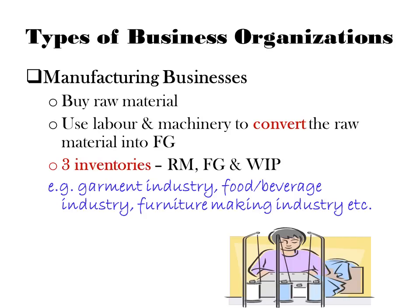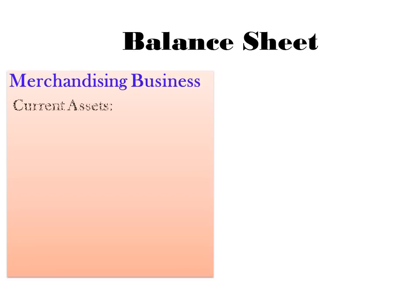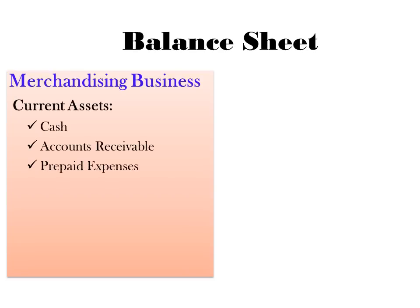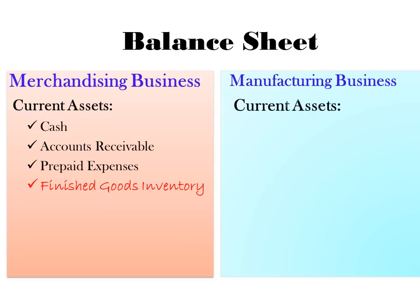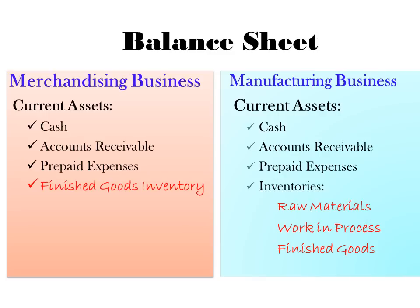Examples of manufacturing businesses include garment making, the food and beverage industry, and furniture making — any entity that buys raw material and converts it into finished goods. From financial accounting, we know that inventory is reflected in the balance sheet under the current asset section. For a merchandising business, current assets include cash, receivables, prepaid expenses, and finished goods inventory. For a manufacturing business, current assets include cash, receivables, prepaid expenses, plus the three inventories: raw material, work in progress, and finished goods.